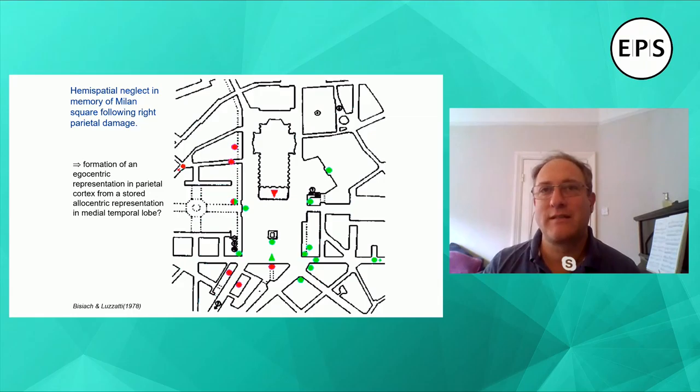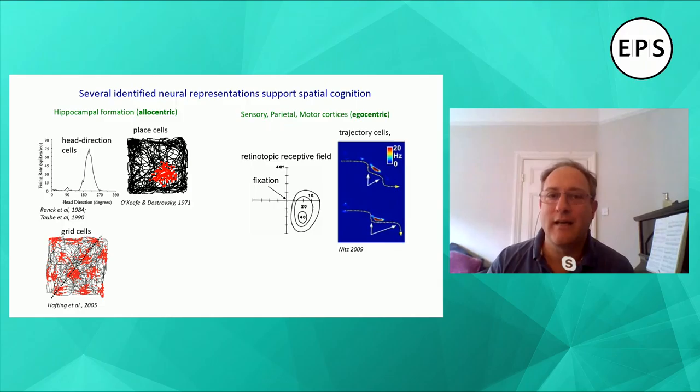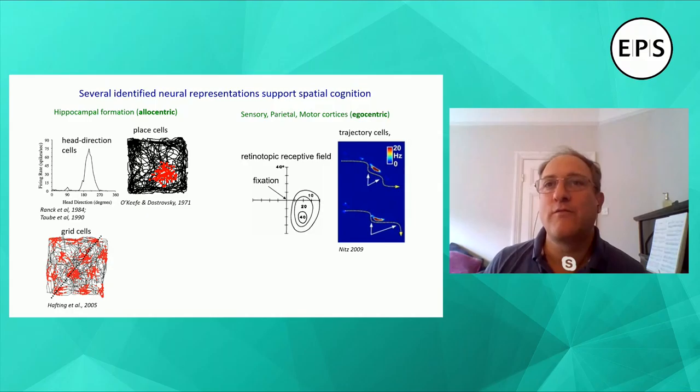Imagining a scene requires it to be put into egocentric coordinates. And if we go on to look at electrophysiological recordings in animals, we now know quite a lot about the neural representations that support this kind of spatial cognition.